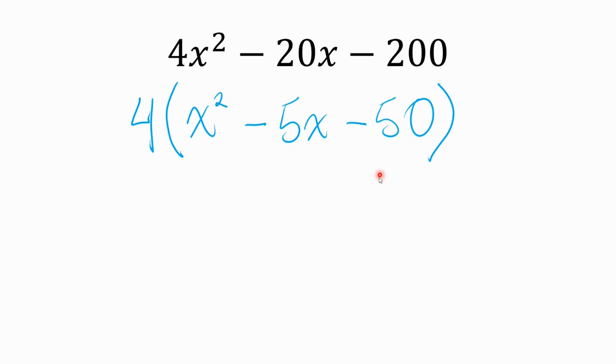Now we have a much smaller number here. We have negative 50 that we need to list factors of, and we're looking for numbers that add up to negative 5x. That's a lot better. It's not going to be 1 times 50. 2 times 25? No, I think it's going to be 5 times 10. So it's either 5 times negative 10 or negative 5 times positive 10.